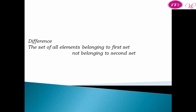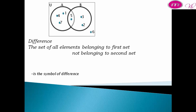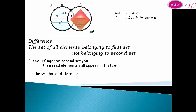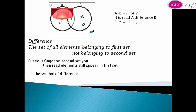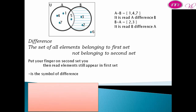Difference: the set of all elements belonging to the first set but not to the second set. To find A difference B, put your finger on the second set, then read the elements still appearing in the first set. A difference B equals {1, 4, 7}. B difference A equals {3, 2}.